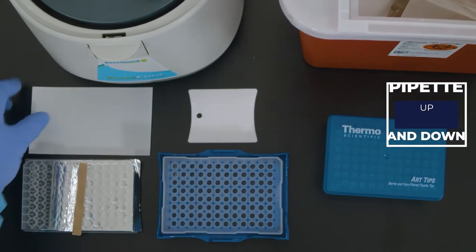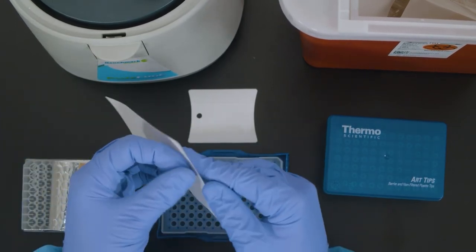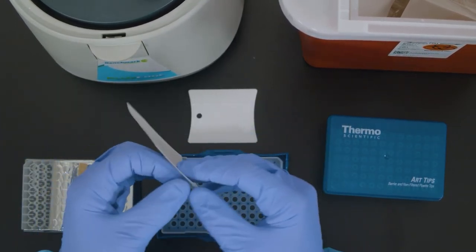Do not add a blank or template to the negative control. It should stay as 45 microliters of MasterMix only to test for contamination.